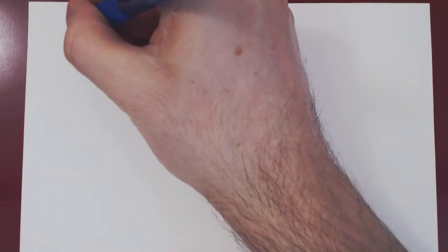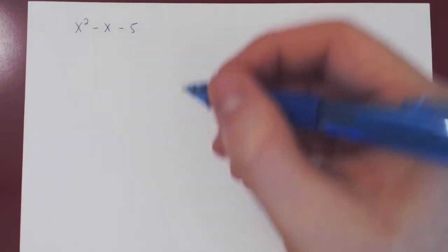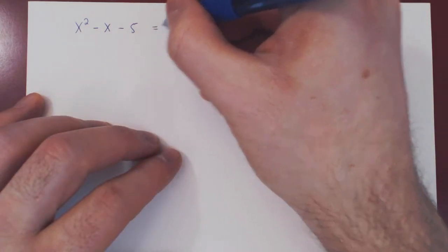So here's the first example, x squared minus x minus 5. It looks simple enough, we could try and factor by inspection.